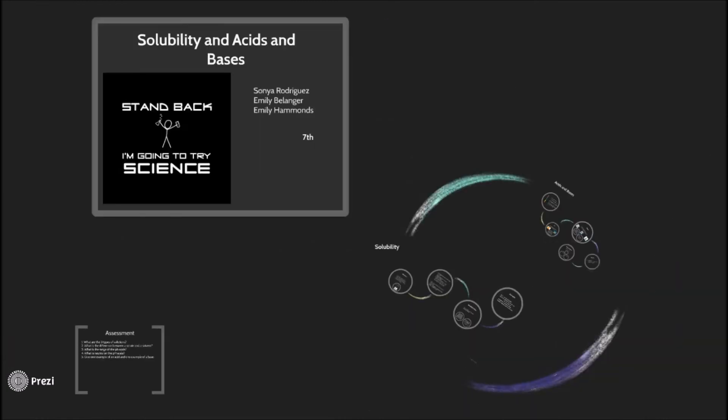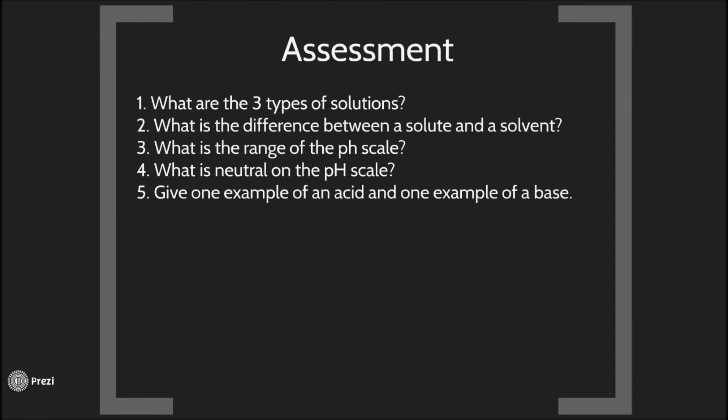This is the end of our video. Now it's time for the assessment. There are five questions we are going to give you. Please answer them on a sheet of paper. Number one, what are the three types of solutions? Number two, what is the difference between a solute and a solvent? Number three, what is the range of the pH scale? Number four, what is neutral on the pH scale? Number five, give one example of an acid and one example of a base.